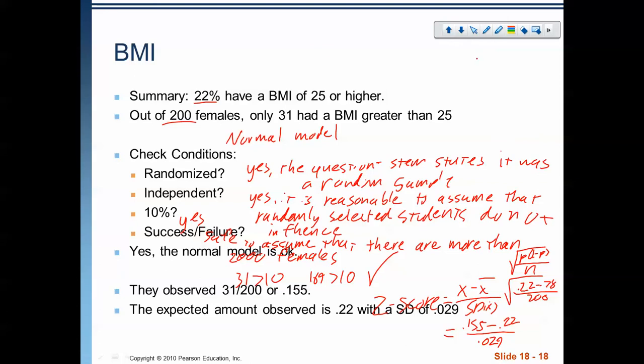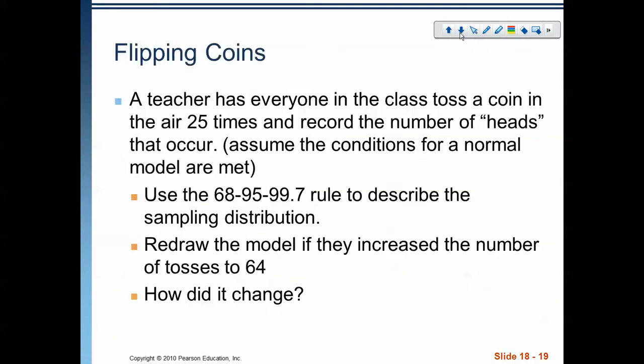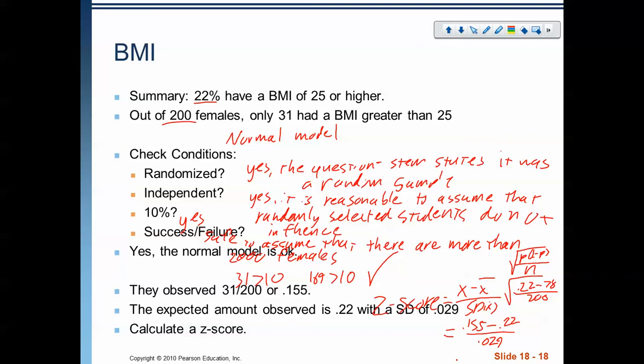So, all said and done, our z-score is, we've got to calculate that 0.155 minus 0.22 divided by 0.029 gives us a z-score of negative 2.24. And we can actually answer the question now, is this an unusually small amount? Yes, it is. This is more than two standard deviations away from the mean. That is definitely an unusual amount.